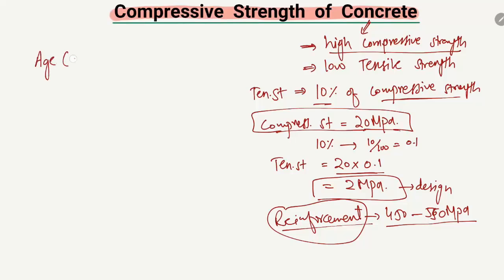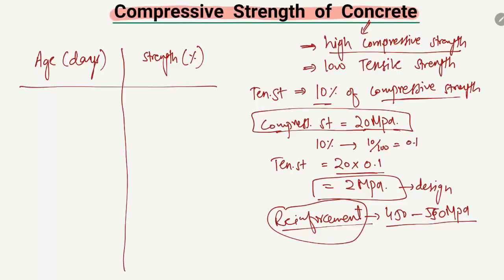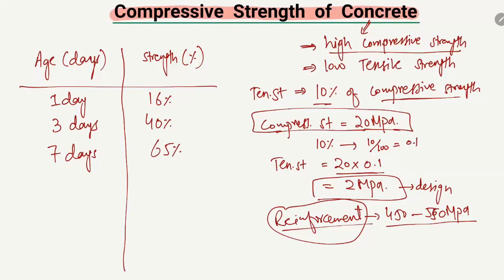Now let's explain concrete strength with time. If we consider the age of concrete in days on one axis and strength of concrete in percentage on the other, we can draw a table. On the first day, the strength of concrete is only 16%. With three days, this strength increases to 40%. With seven days, the concrete achieves 65% of its strength.